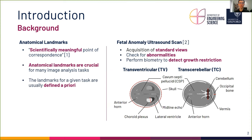For the first view, the transventricular plane, it is defined by the appearance of the anterior horn, the choroid plexus, the lateral ventricle, the midline echo, the skull, and the cavum septipelucidi (CSP for short). It is used to measure the ventricular atrium of the lateral ventricle and the head circumference.